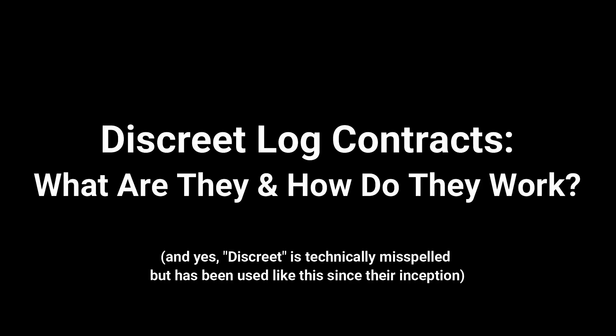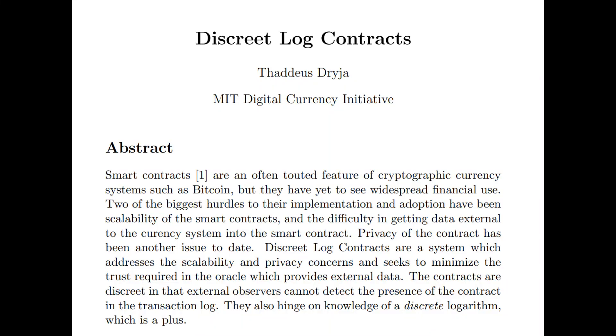Let's dive into the motivation behind DLCs, and then we'll get into how they work. The concept of DLCs goes quite a ways back, and this comes from Tadge Dryja, who was one of the co-authors of the Lightning Network white paper. The motivation behind this is to enable trust-minimized off-chain contracts that help solve for some of the potential issues we see with broader smart contract platforms like Ethereum. And those include things like potentially high fees, when you try and cram all this functionality on the same base layer.